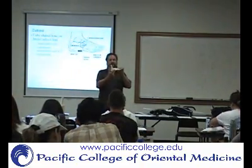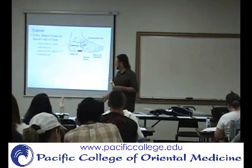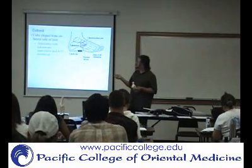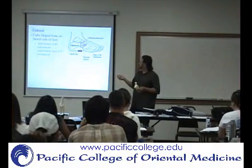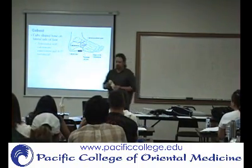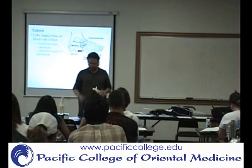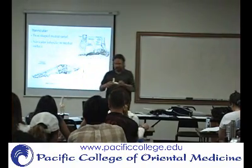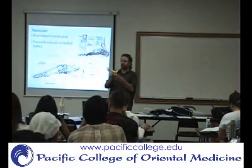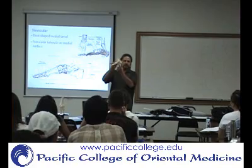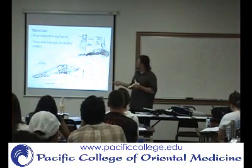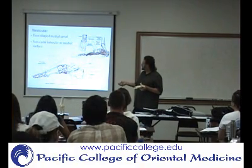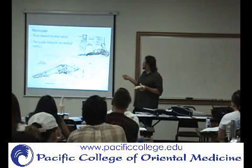On the lateral side we have the cuboid — it's a cube-shaped bone that articulates between the calcaneus and the fourth and fifth metatarsals. On the medial side, right after the talus, you have the navicular, which has a curved shape like a boat.